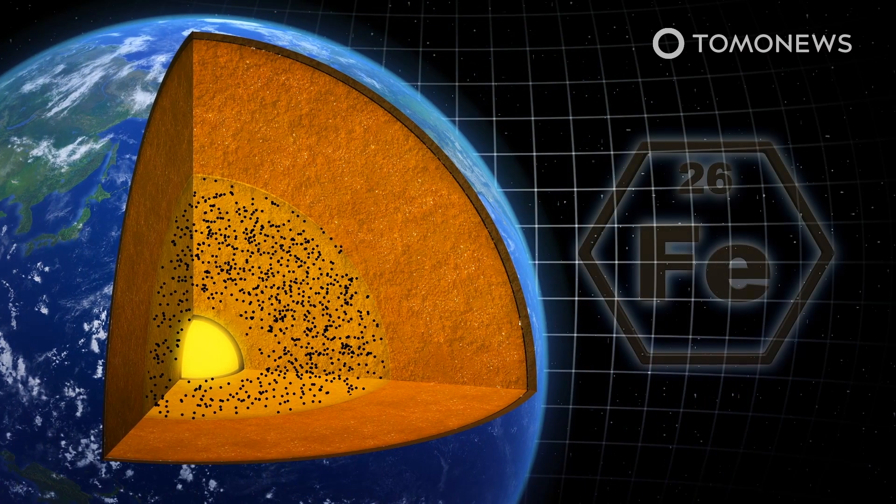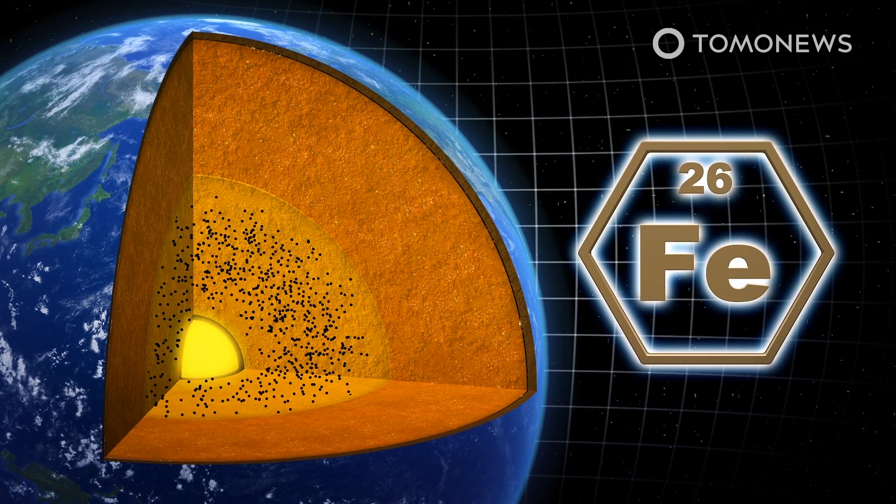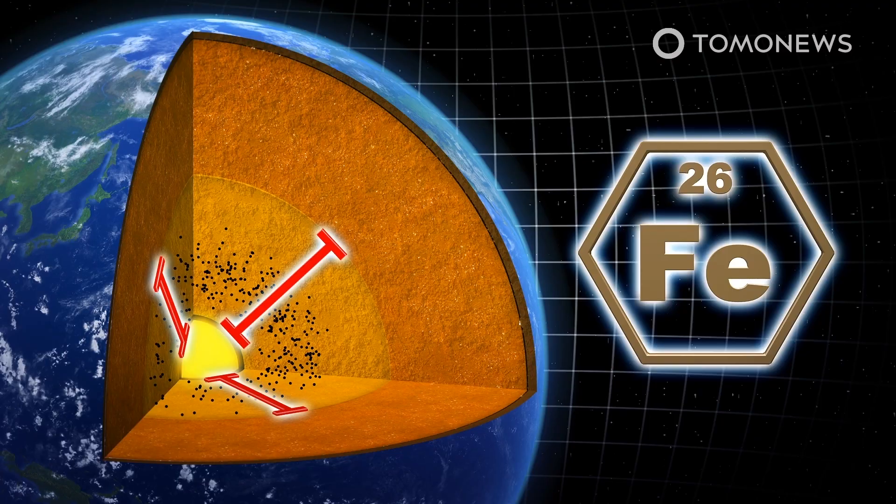The University of Texas at Austin said in a press release that these iron particles form a 300-kilometer layer above the Earth's solid inner core.